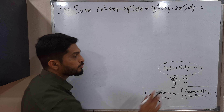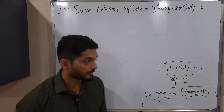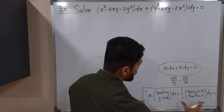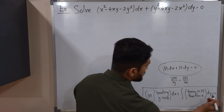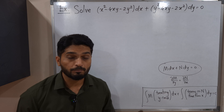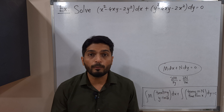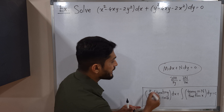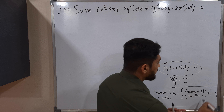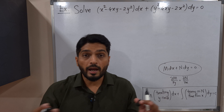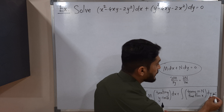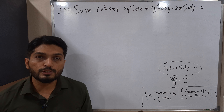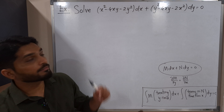Using this formula we directly get the solution. It involves two integrations. We first find the value of the first integration, then find the value of the second integration, add them, and write equals c. That is our method. Let us follow this method to solve the given differential equation.